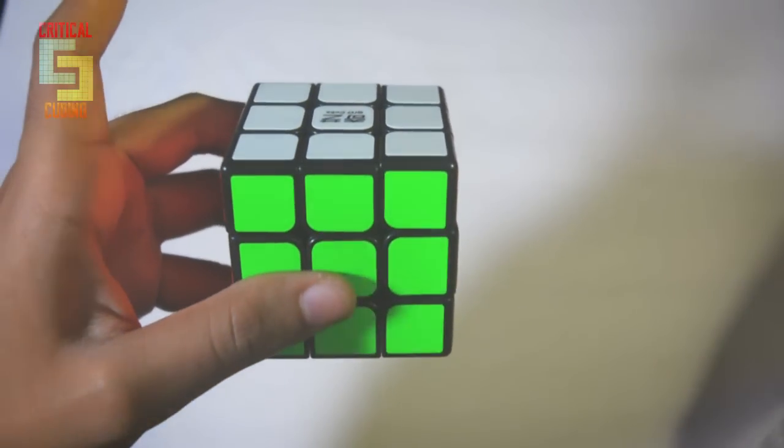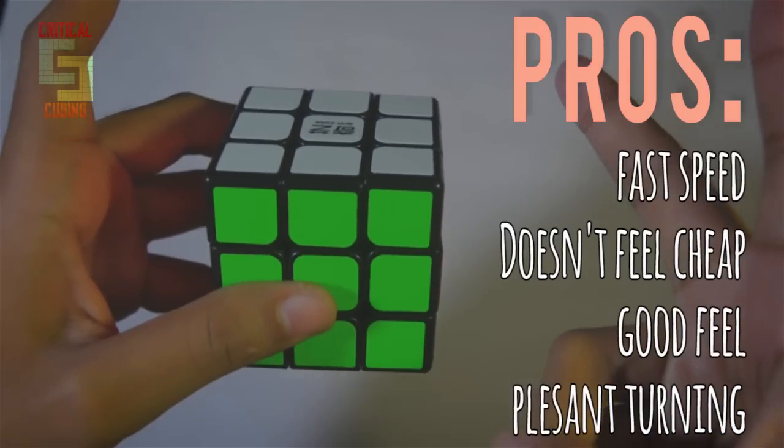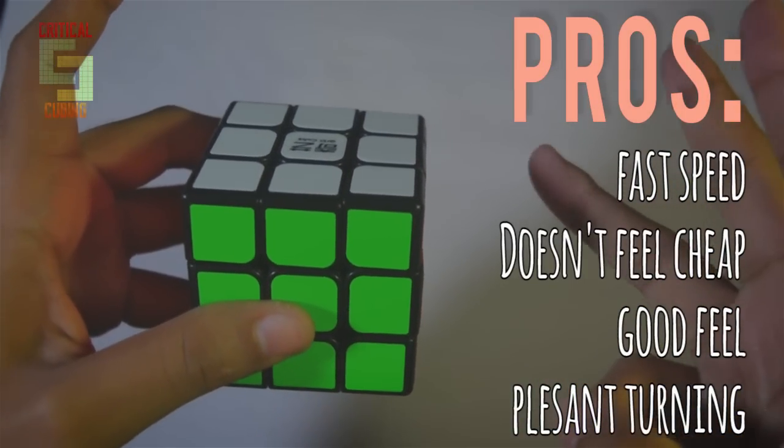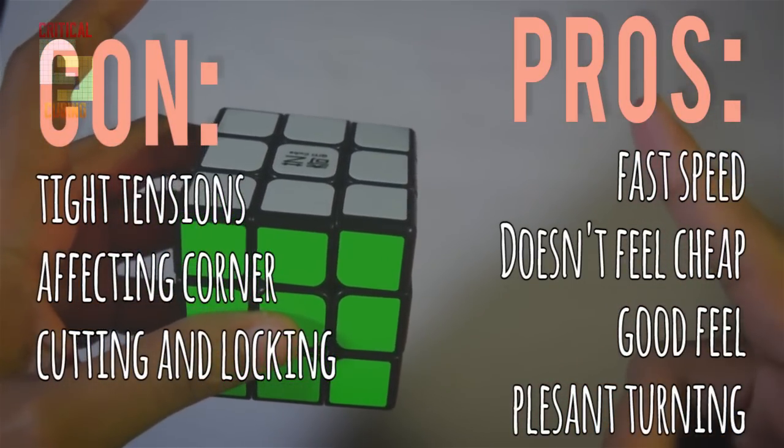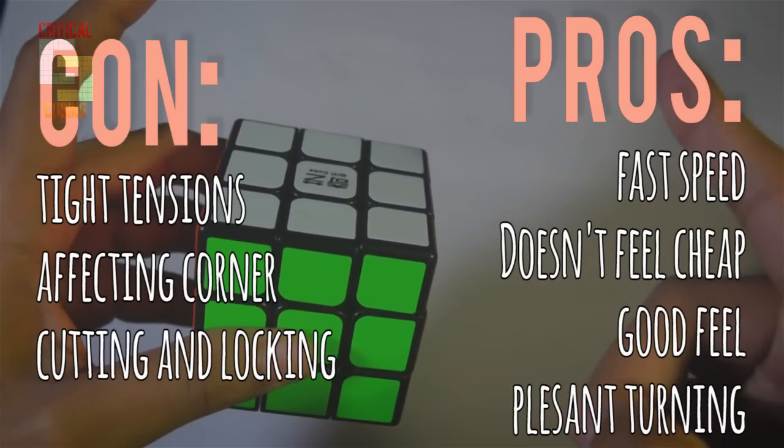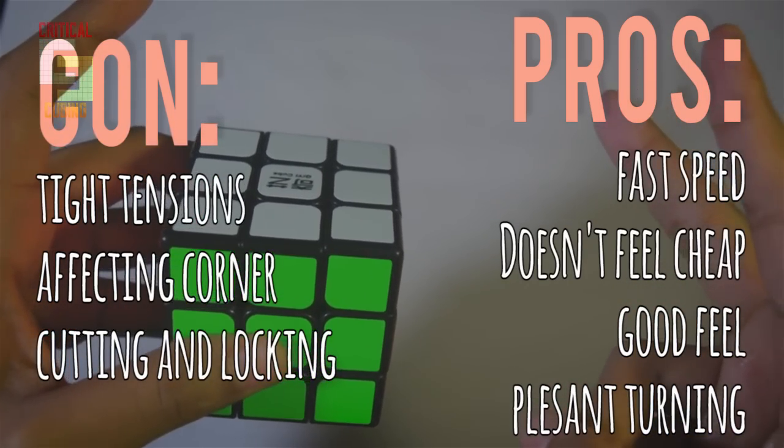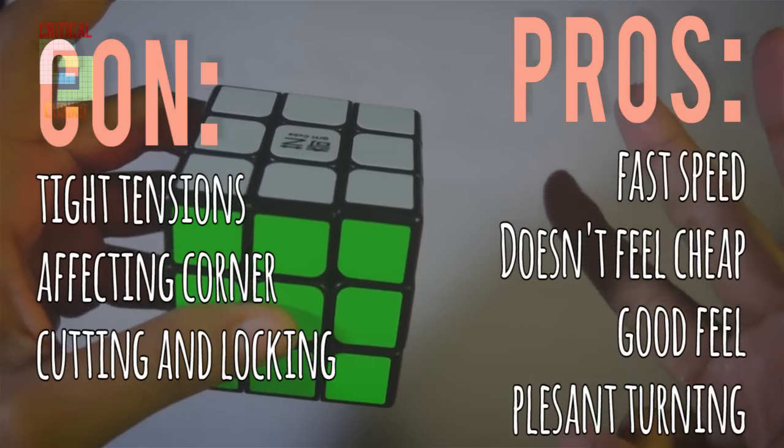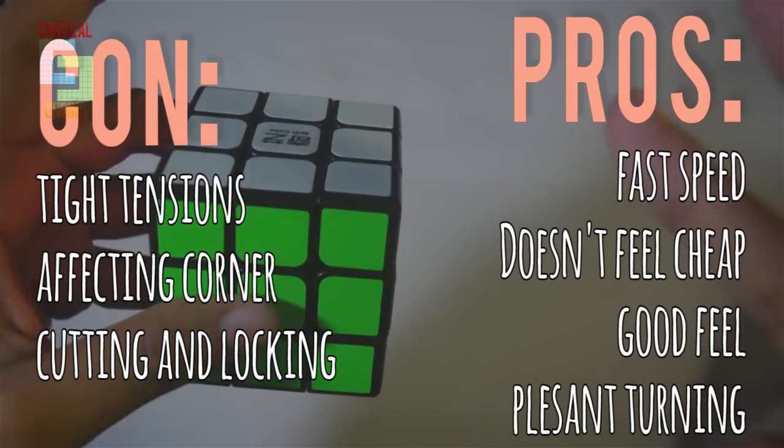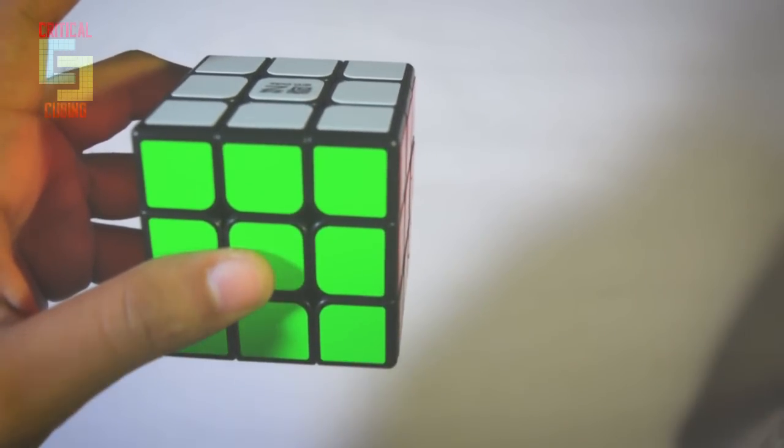My pros of this cube is that it is fast, it has a good feel to it, and the turning is also quite pleasant. The only downside would be that because of its fastness, I am getting catches and locks, and the tensions are a bit tight, so the catches and locks are also happening due to that. And because of the tight tensions, the corner cutting has also been affected a bit. And yeah, that is pretty much it for this video guys.